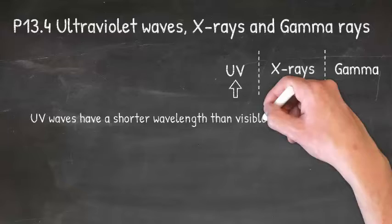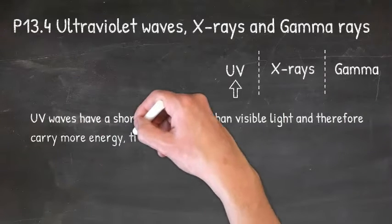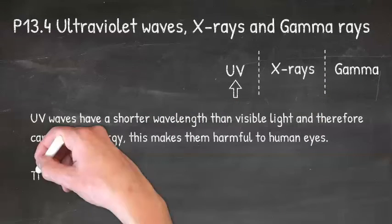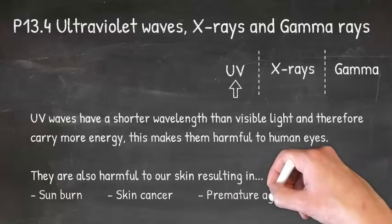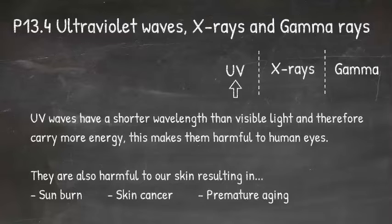UV waves have a shorter wavelength than visible light and therefore carry more energy. This makes them more harmful to human eyes. They are also harmful to our skin, resulting in sunburn, skin cancer and premature aging.